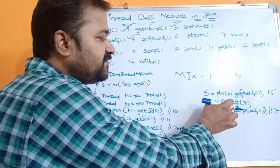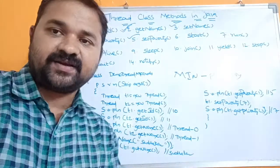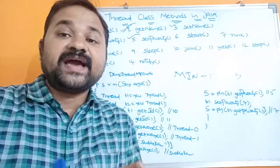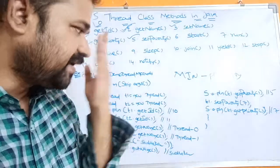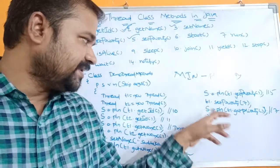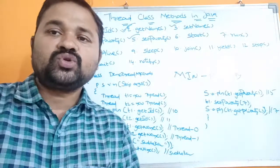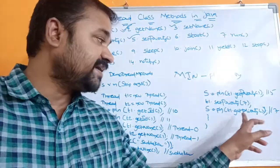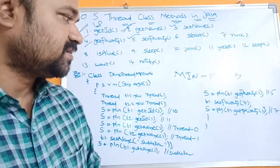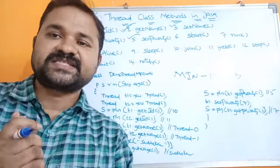We should not write t1.setPriority(7) inside System.out.println, because setPriority only sets the priority for the thread — it does not return a printable value. That's why we must write that statement separately first. If we want to know the priority of the thread, we then use getPriority on the thread object. So here the priority is 7, and we will get 7 as the output.